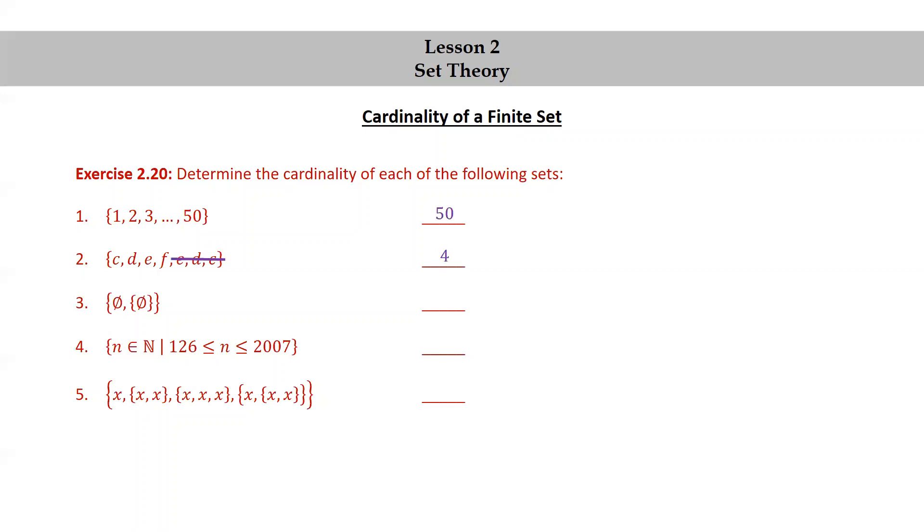The set consisting of {∅, {∅}}. Well, let's circle the elements of the set. There's the empty set, and there's the set containing the empty set. We see that there are two elements.